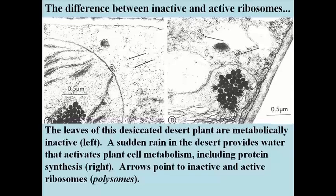In this slide, the left panel illustrates a cell containing inactive ribosomes, most likely as separate subunits. The cell in this case is from a dried out, or desiccated, desert plant called the resurrection plant.